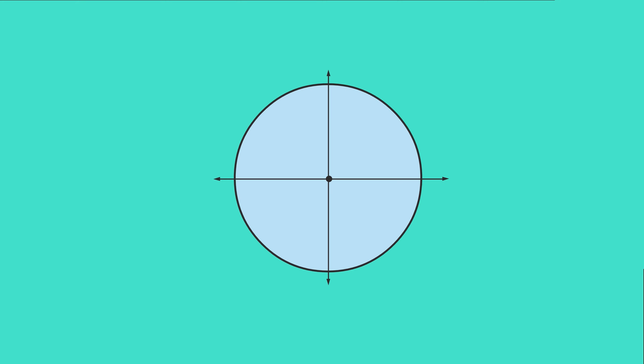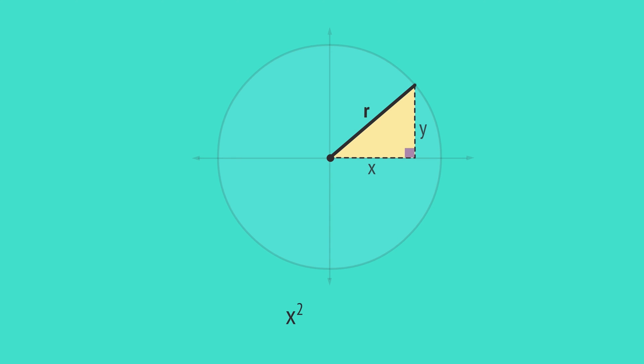Right-angled triangles can be used in many problems involving circles. This circle is centred at the origin and any point on the circumference has coordinates. The coordinates are related to the circle's radius by Pythagoras. The x-coordinate squared plus the y-coordinate squared will equal the radius squared.